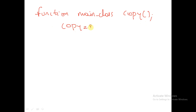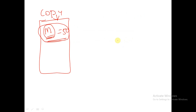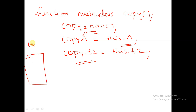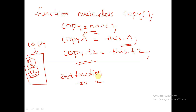In this copy function, we create an object for handle copy, allocate the value of n using this.n, and also allocate the handle present inside this class to the copy object. So the copy object will contain the property n as well as the handle t2. We copy the handle and the property, then end the function and end the class.